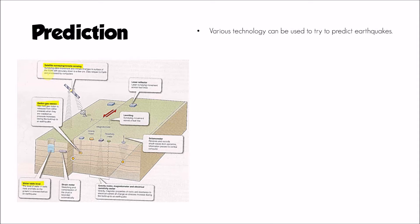We can also look at changes in magnetic fields surrounding an area about to experience an earthquake. Small earthquakes could be a precursor to a larger earthquake event. We might also be able to detect, using a laser level across a fault line, any subtle changes in the movement of one part of a fault line relative to another.